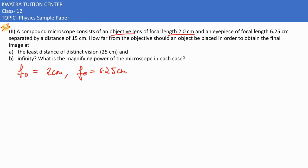The question asks how far from the objective should an object be placed to obtain the final image at the least distance of distinct vision, which is 25 cm. So fₑ is positive and vₑ is negative 25 cm.